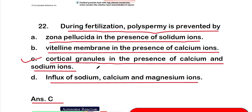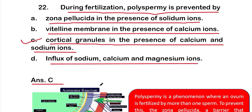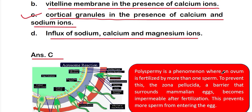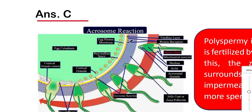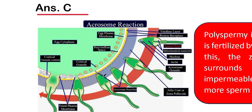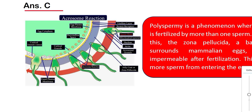Polyspermy is a phenomenon where an ovum is fertilized by more than one sperm. To prevent this, the zona pellucida, a barrier surrounding mammalian eggs, becomes impermeable after fertilization, preventing more sperm from entering. In the picture you can see the zona pellucida and the cortical granule contents which prevent polyspermy.